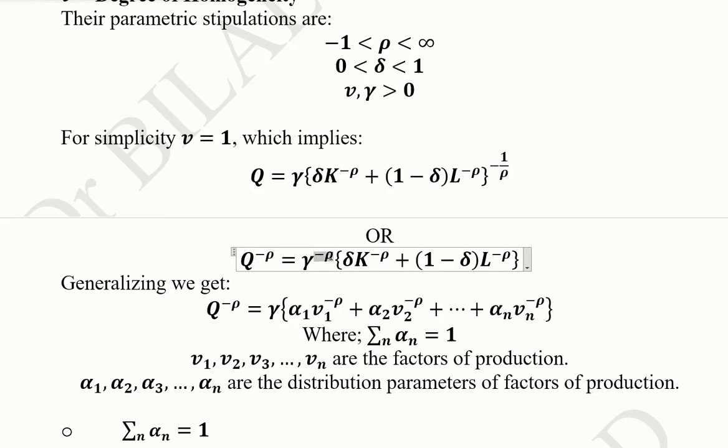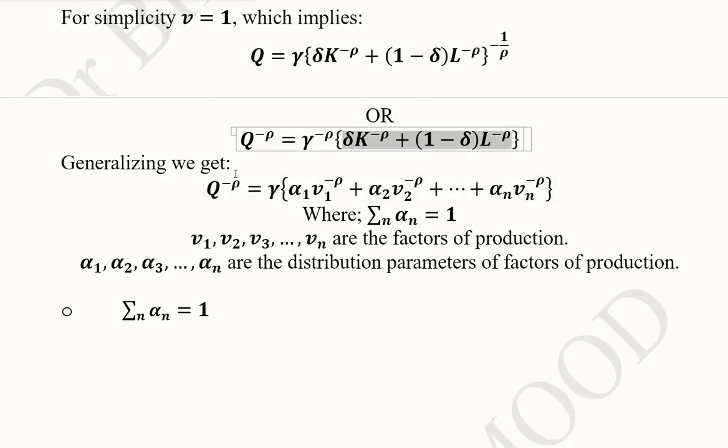We'll continue using this expression because it's easier to solve without the whole power. The power cancels out by raising both sides to -ρ. It also appears on the γ parameter, which originally had no power. On the bracketed term, the powers cancel out.